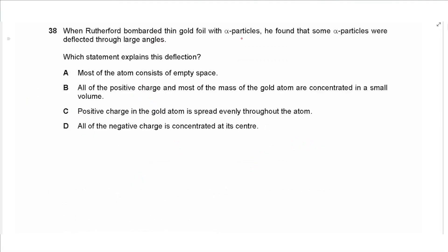Question 38: When Rutherford bombarded thin gold foil with alpha particles, some were deflected through large angles. Most atoms consisting of empty space explains why most particles passed through undeflected. The large-angle deflections are explained by the fact that all positive charge and most mass of the gold atom are concentrated in a small volume (the nucleus). The positive charge is not spread evenly. Answer is B.